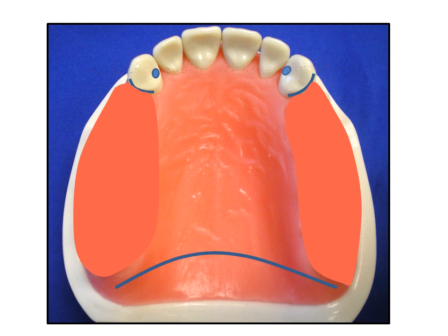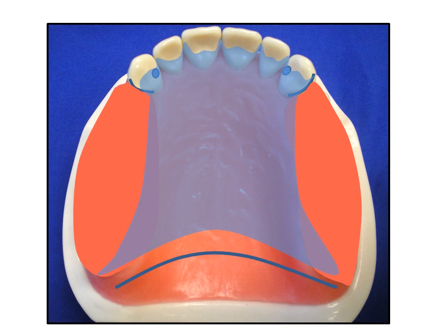Next, we select the complete palatal plate major connector. The complete palatal plate is normally used when abutment support is minimal. This rigid major connector will maximize vertical support, and intimate adaptation of the partial denture with the underlying tissue will assist with retention of the partial denture.